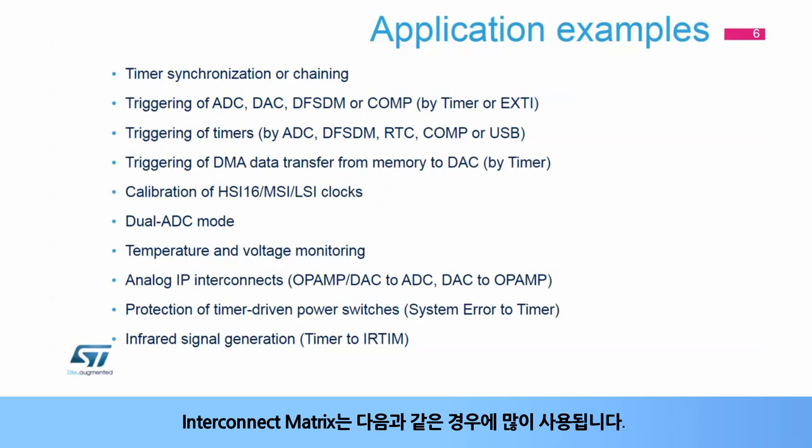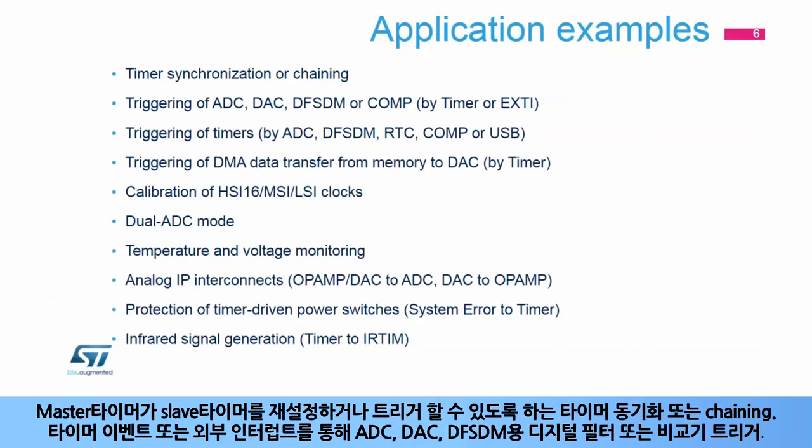The interconnect matrix is mostly used for synchronizing or chaining timers — for example, allowing a master timer to reset or trigger a second slave timer. It is also used for triggering an ADC, DAC, digital filter for sigma delta modulator, or comparator through a timer event or an external interrupt.